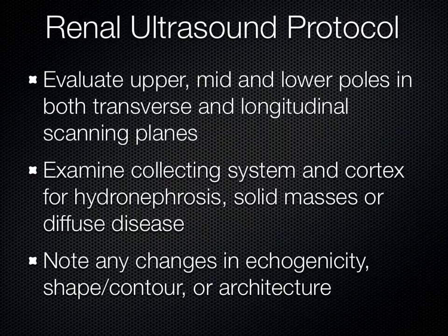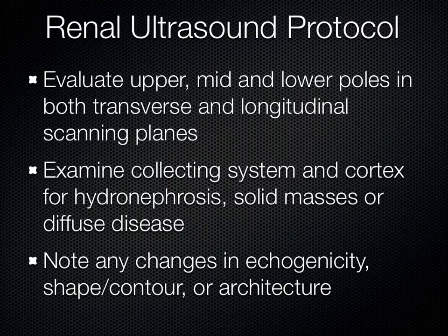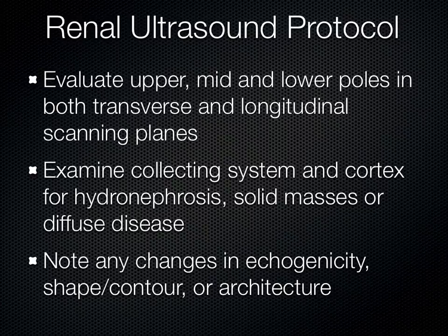The upper pole of the kidney is towards the head, the lower pole towards the feet, with the mid pole in between. You can view the kidney in its long axis, then flip the probe 90 degrees for a short axis. You basically assess the whole system for its architecture, echogenicity, shape, and contour. Eventually you'll be looking for problems in the collecting system, cortex, cystic structures, solid masses, and diffuse disruptions in the kidney.